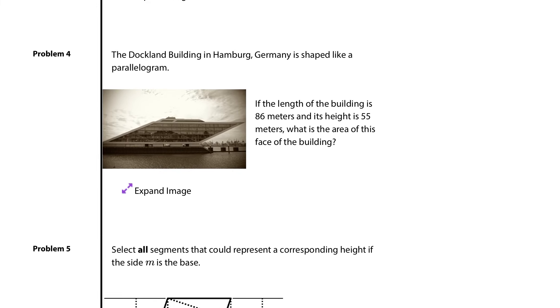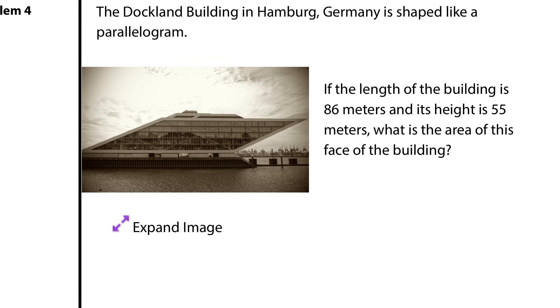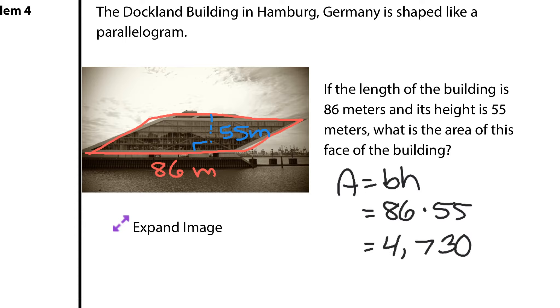Question 4. The Dockland building in Hamburg, Germany is shaped like a parallelogram. If the length of the building is 86 meters and its height is 55 meters, what is the area of the face of the building? I'm going to sketch over this here. The length was 86 meters. And the height, which meets at that right angle, is 55 meters. Well area of parallelograms, whether they're the face of the building or on a grid in a book, is base times height. So 86 multiply by 55, and you'll get 4,730 square meters.